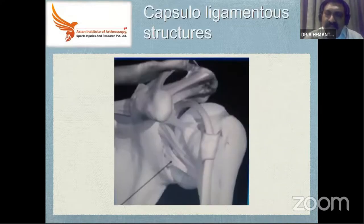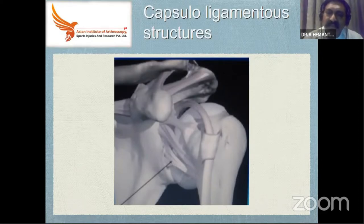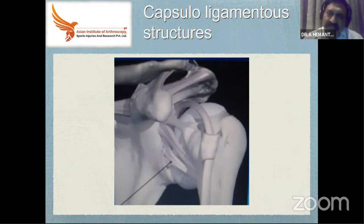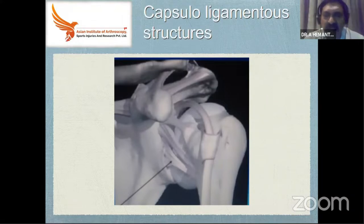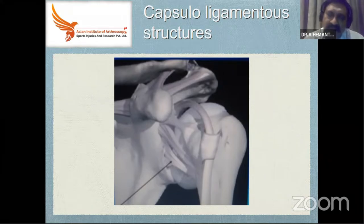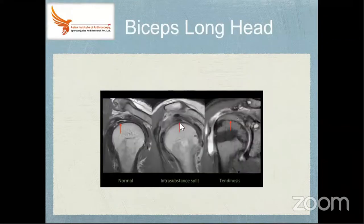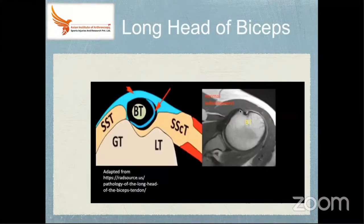What makes this joint different from other joints is the structure called the long head of biceps, which originates from the superior part of the glenoid. This is an intra-articular structure. We normally see structures lateral to the joint, but here the long head of biceps is intra-articular — and this has a lot of significance in pathology and conditions causing shoulder pain.